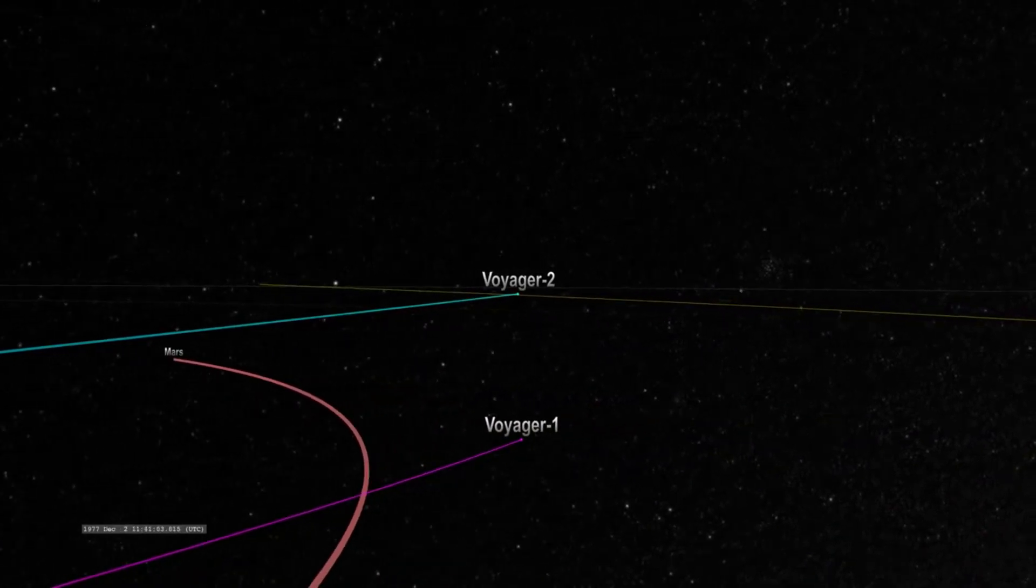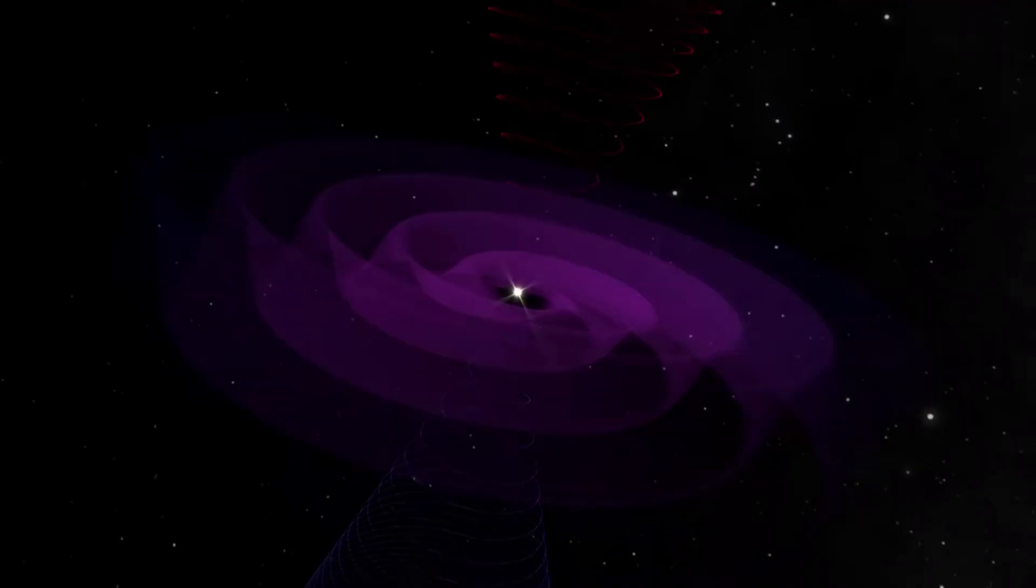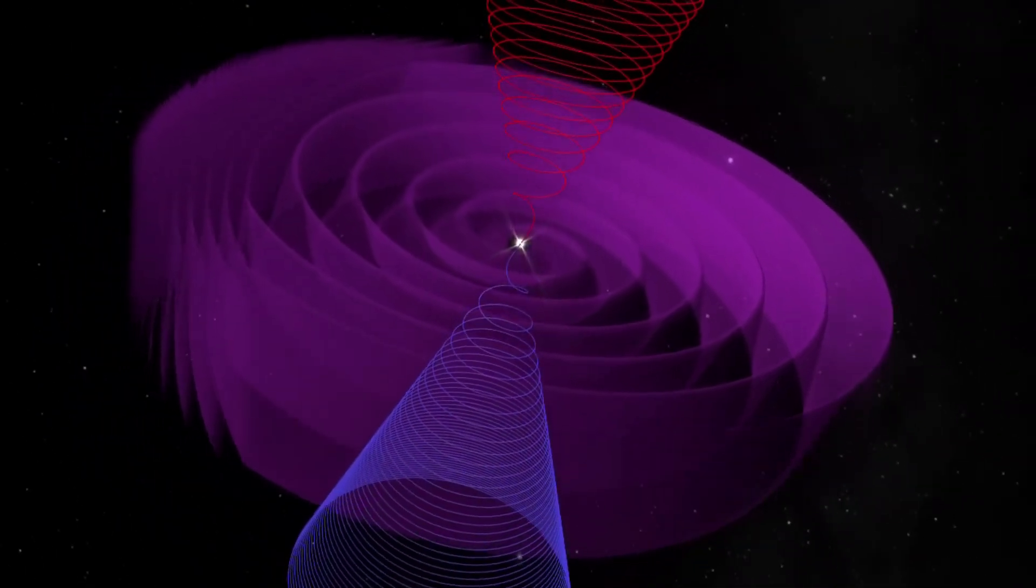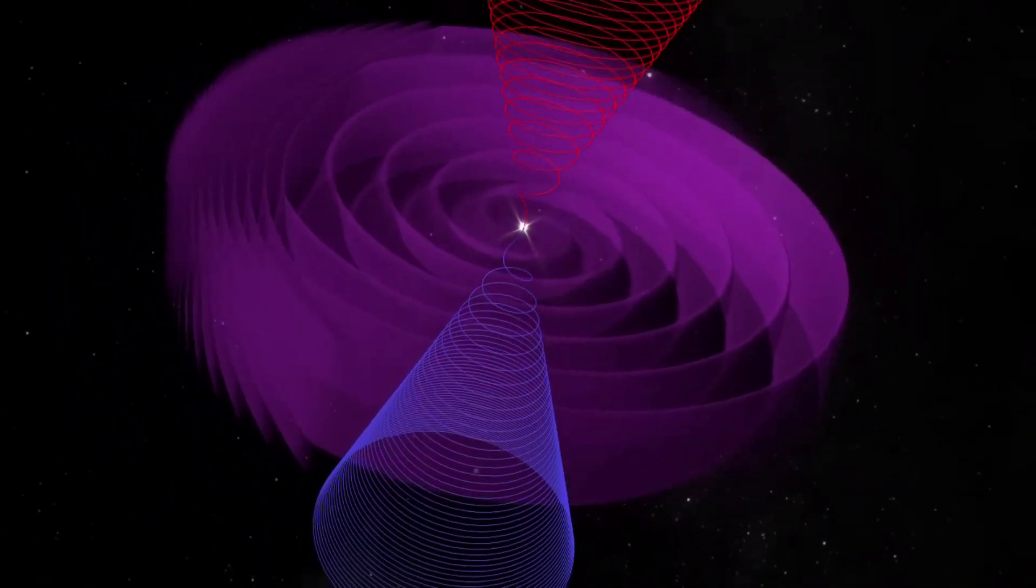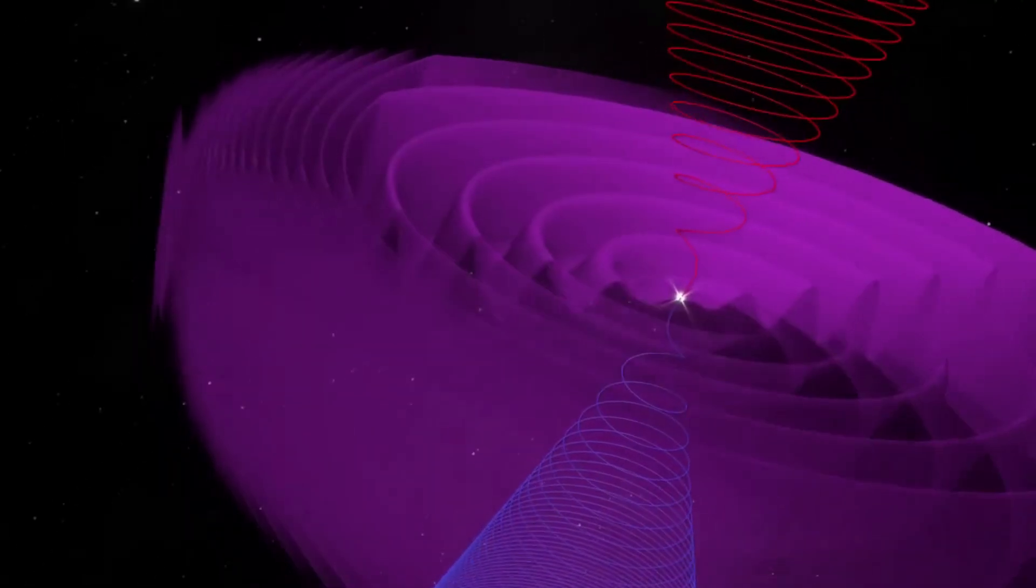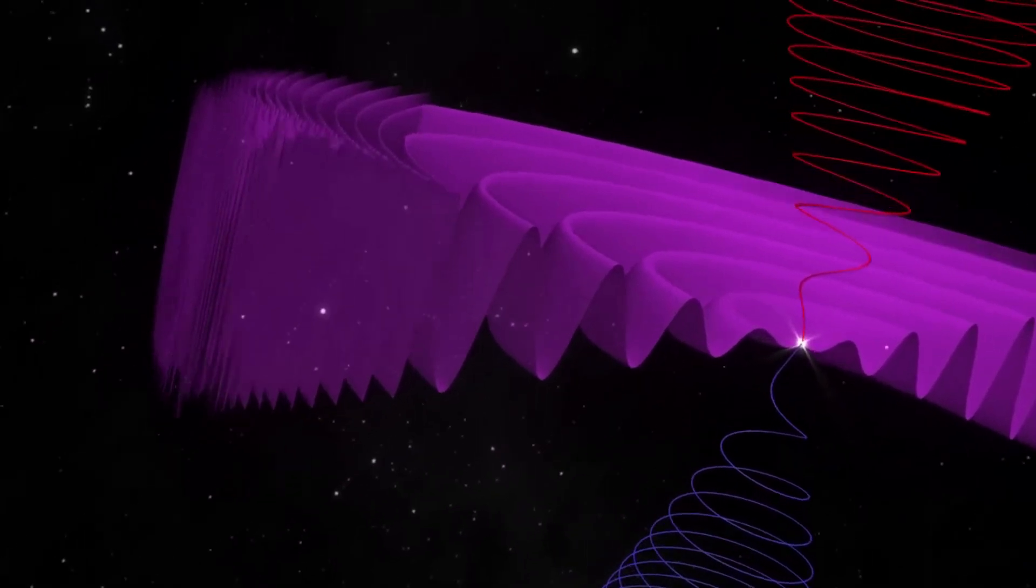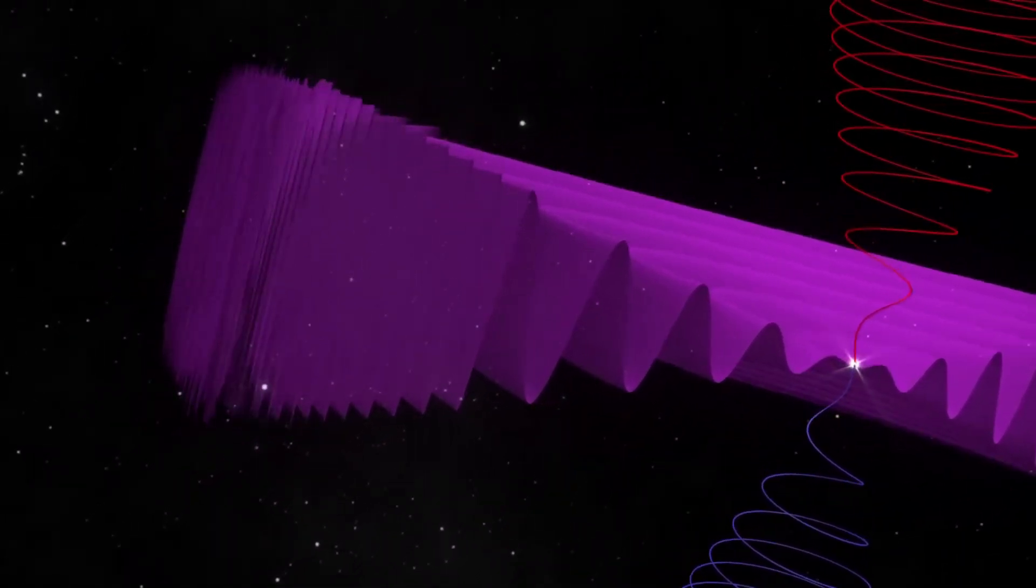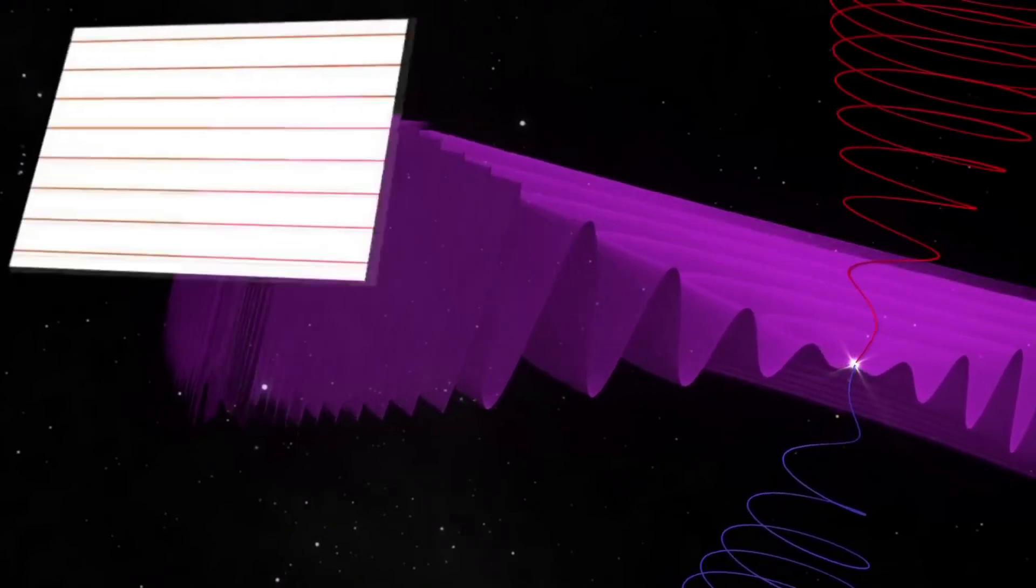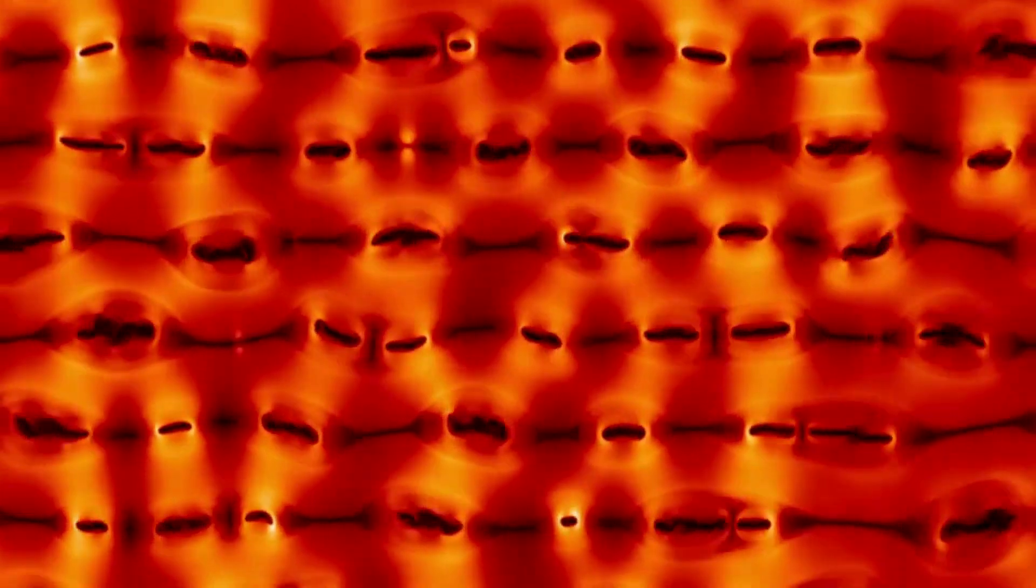Its twin, Voyager 1, crossed this boundary in 2012, but Voyager 2 carries a working instrument that provides first-of-its-kind observations of the nature of this gateway into interstellar space. The most compelling evidence of Voyager 2's exit from the heliosphere came from its onboard plasma science experiment, or PLS, an instrument that stopped working on Voyager 1 in 1980, long before the probe crossed the heliopause. Until this milestone, the space surrounding Voyager 2 was filled predominantly with plasma flowing out from our sun. This outflow, called the solar wind, creates a bubble, the heliosphere, that envelops the planets in our solar system.